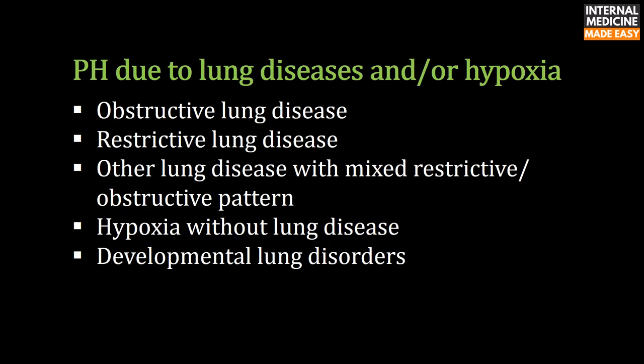Pulmonary hypertension due to lung diseases and/or hypoxia: causes include obstructive lung disease, restrictive lung disease, other lung disease with mixed restrictive or obstructive pattern, hypoxia without lung disease, and developmental lung disorders.